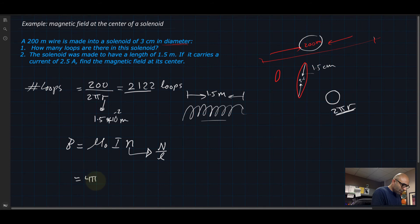μ₀ is 4π times 10 to minus 7. The current is 2.5 amps, and the number of loops we found at 2,122 divided by the length 1.5. And if we do these calculations...